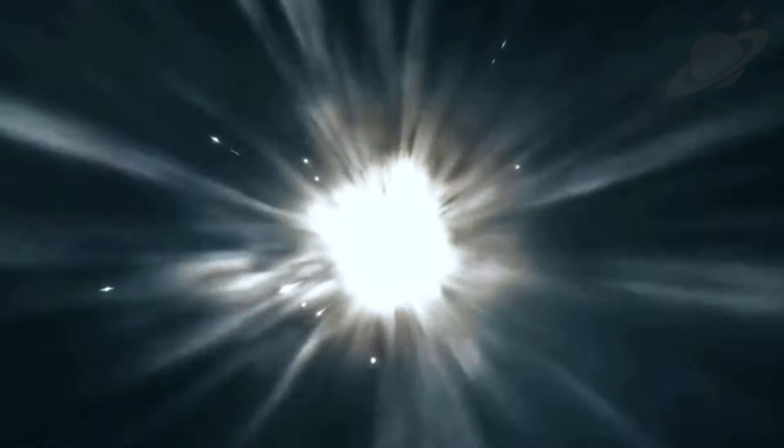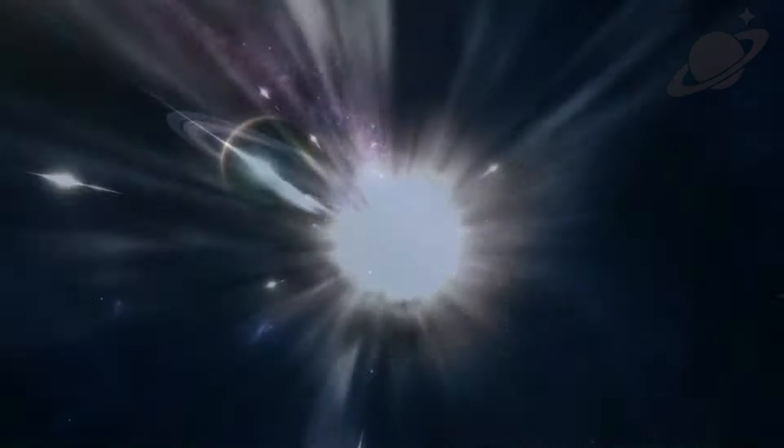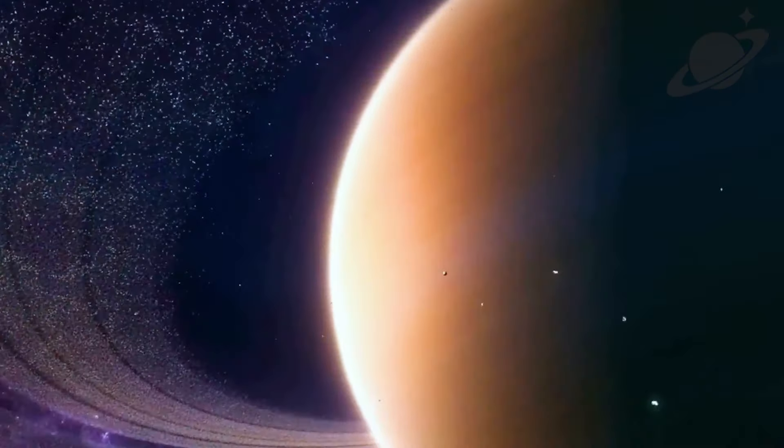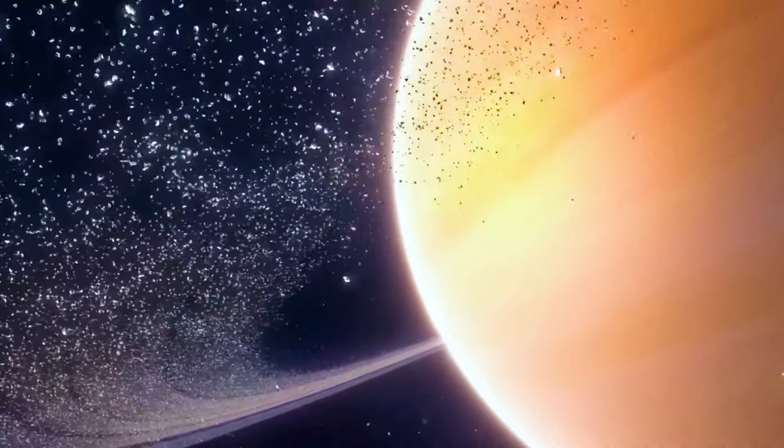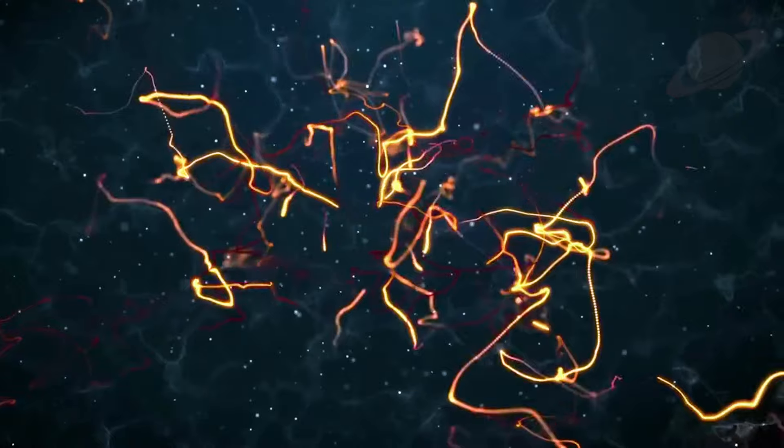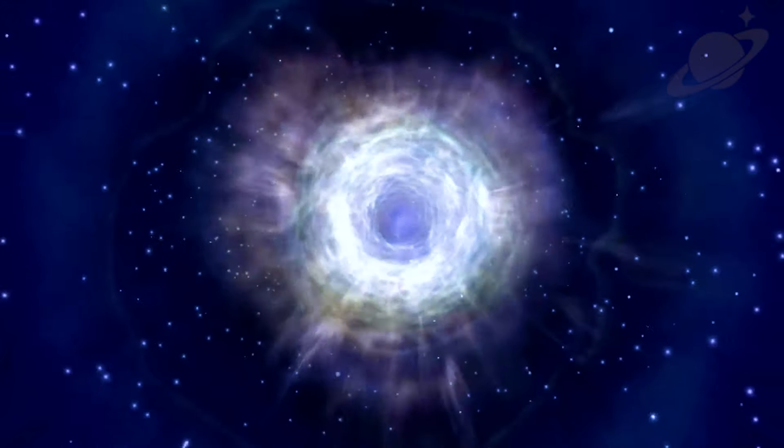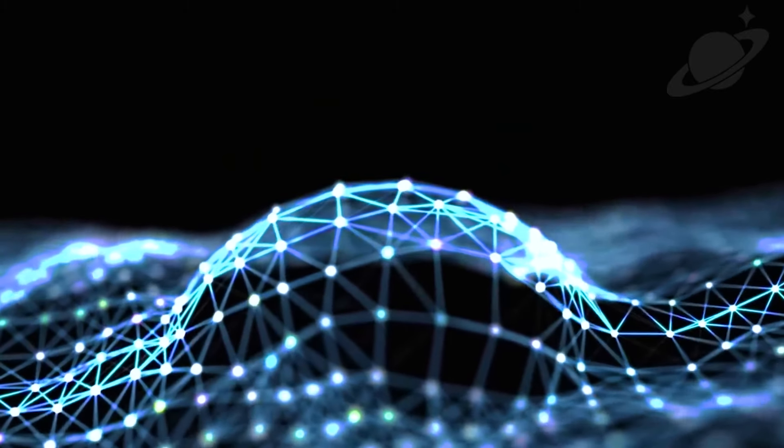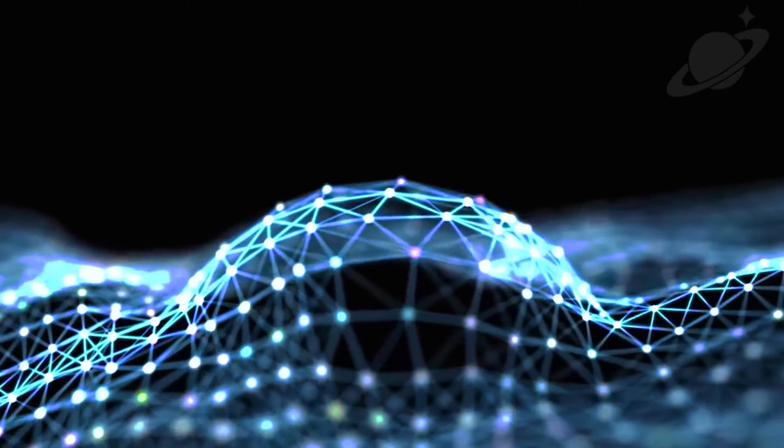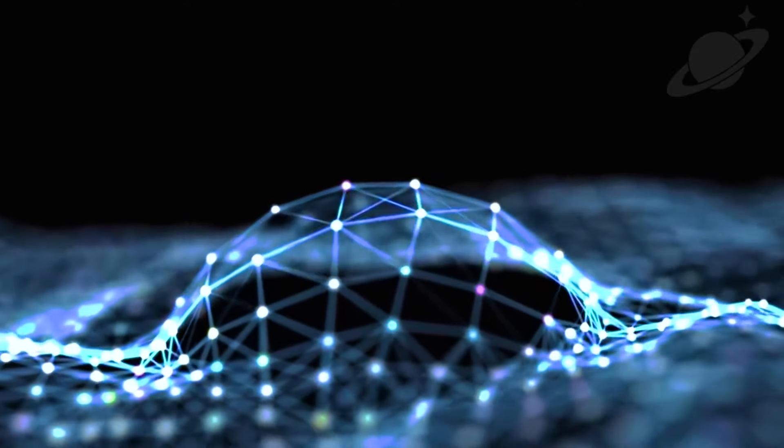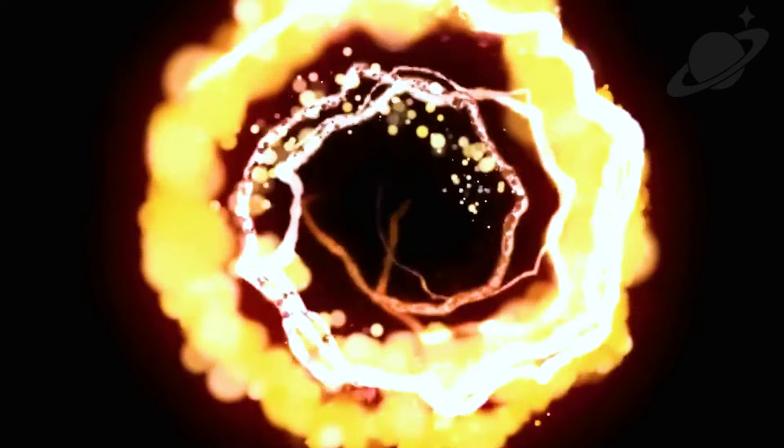Boötes Void isn't just big, it's really empty too. In a space where we'd normally expect to find 10,000 galaxies, there are only 60 in Boötes Void. Think of it like a vast desert in space, surrounded by a crowded cosmos full of galaxies. The existence of such a massive empty space challenges the idea that the universe should look roughly the same in all directions when viewed on a large scale. But the mysteries of Boötes Void don't stop there. Some galaxies in the Void are arranged in a strange tube-like structure, and we're not entirely sure why.